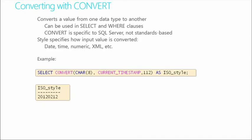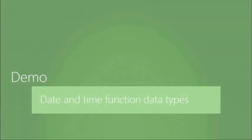The CAST function converts data types: for example, SELECT CAST(SYSDATETIME() AS DATE) AS TodaysDate. It returns an error if data types are incompatible — for instance, you cannot cast a date directly to an integer. CONVERT can also be used in SELECT and WHERE clauses, and allows you to specify a style parameter such as ISO format.